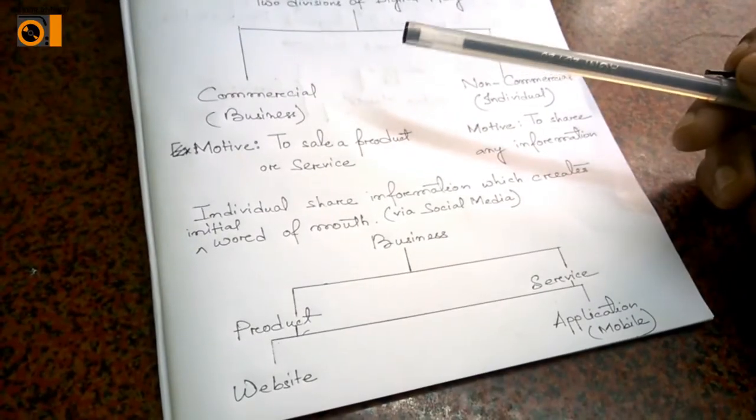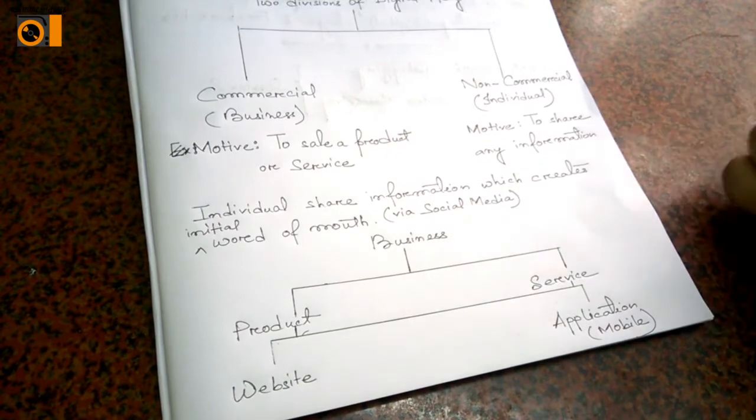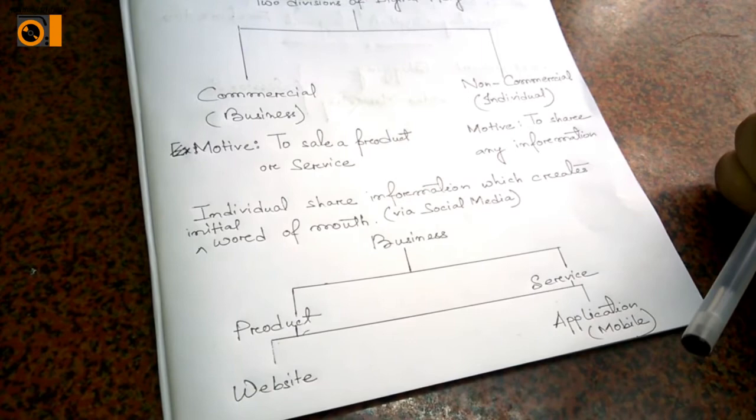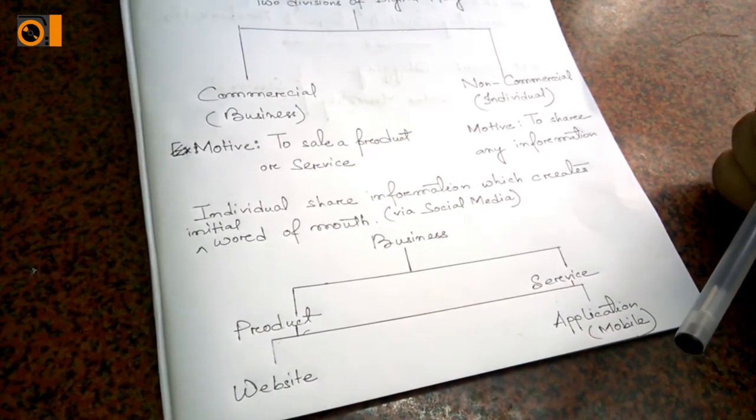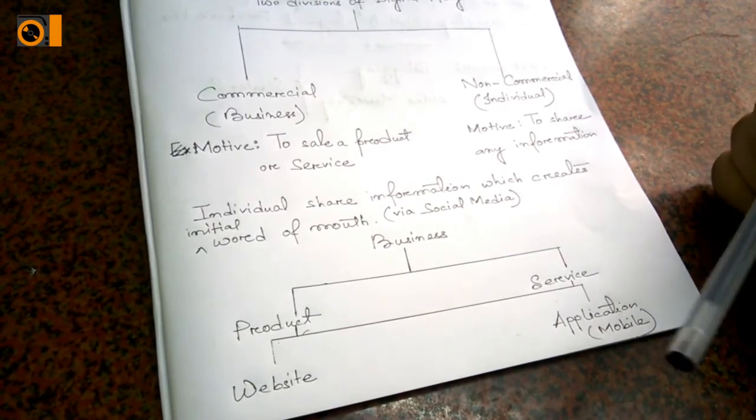Individuals share information which creates the initial word of mouth via social media. So we got social media platforms as Facebook, Twitter, Instagram, WhatsApp, etc. So through that when we share any stuff, that is where the initial word of mouth gets created.